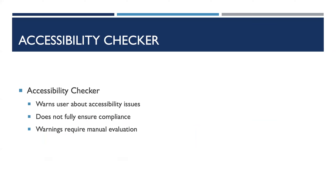Accessibility checkers are tools that ensure digital content meets certain standards of accessibility. However, they don't check everything — they can catch many issues but will not guarantee full compliance. Some aspects require manual evaluation, and sometimes these checkers will generate warnings that need someone to go through and remediate. It's important to always review the document yourself to make sure nothing is missed.